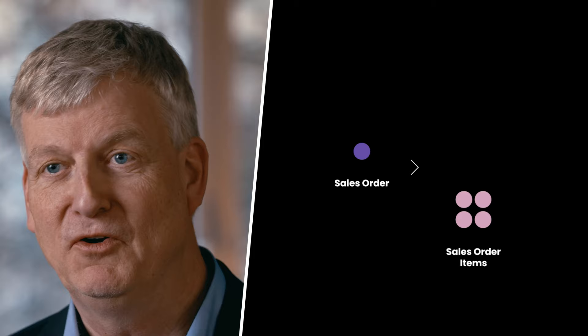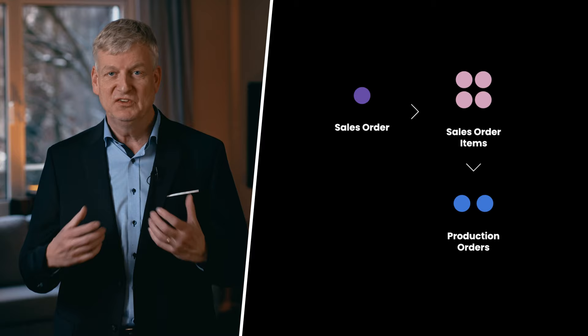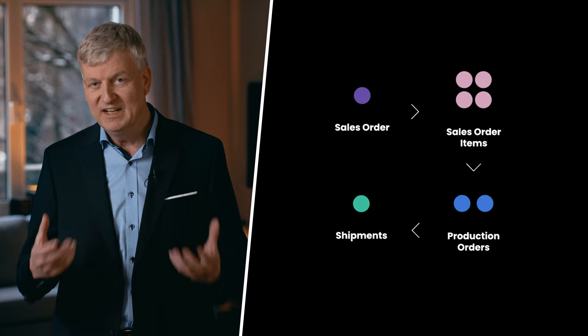For example, we may have a customer submit a sales order for four items on the same day. One item is in stock and the other three need to be manufactured, for which two production orders are created. The first item which is in stock is then packaged and shipped on its own.